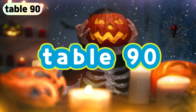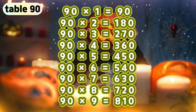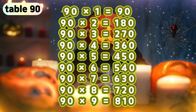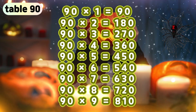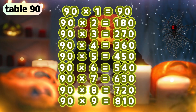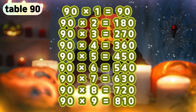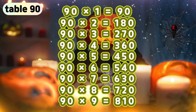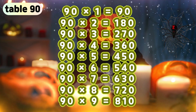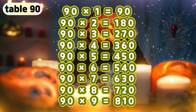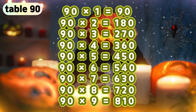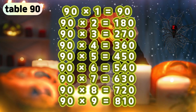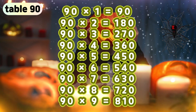Table 90. 90 times 1 is 90. 90 times 2 is 180. 90 times 3 is 270. 90 times 4 is 360. 90 times 5 is 450. 90 times 6 is 540. 90 times 7 is 630. 90 times 8 is 720. 90 times 9 is 810.